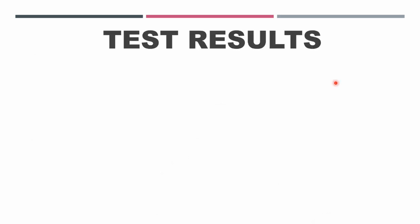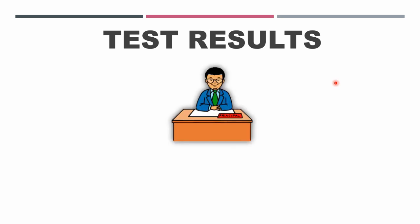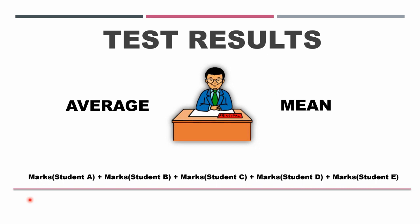Now it's test time. The principal decides a simple method: he'll take the average or mean of the marks that those five pupils are getting, which means that he'll add the marks of each student, A, B, C, D, and E, and divide by the number of students, which is five.